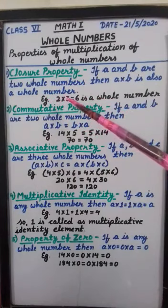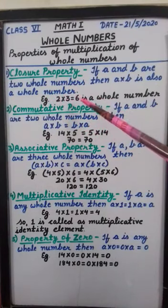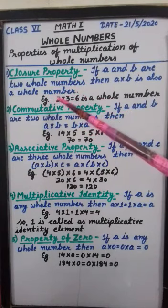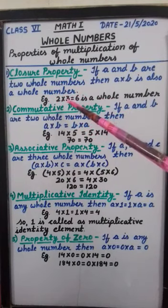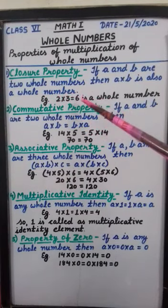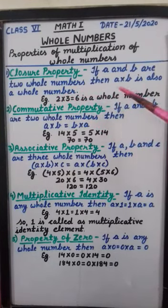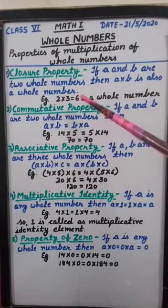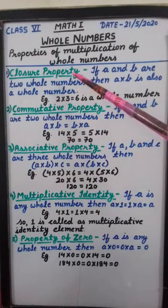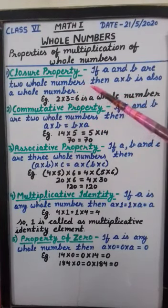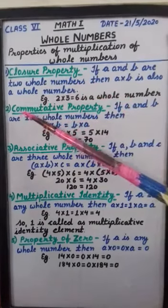Two multiply by three — my result is six. Two is a whole number, three is a whole number, and on multiplication we are getting six, which is also a whole number. That means closure property is true for multiplication of whole numbers.